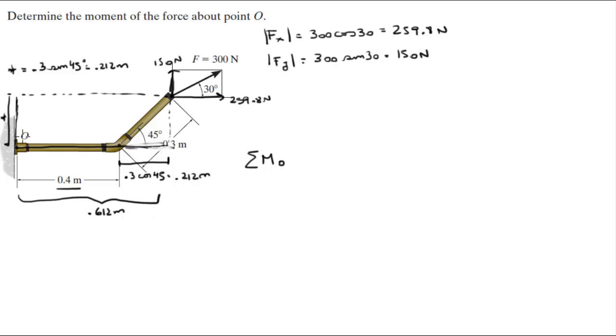So sum of the moments around O, assuming counterclockwise is positive. Let's work with the Y first. The Y pulls this lever arm this way, which means that it's counterclockwise, which means that it's positive. The force is 150 newtons and the length of the lever arm is 0.612 meters.